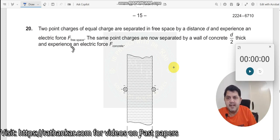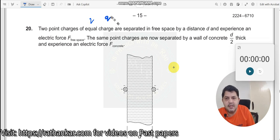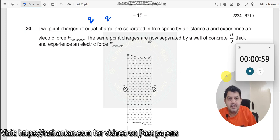Okay, question number 20. Two point charges of equal charges Q and Q, start the timer. They are separated in free space by distance d and experience an electric force F free space.